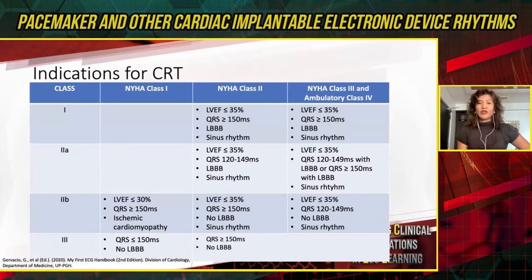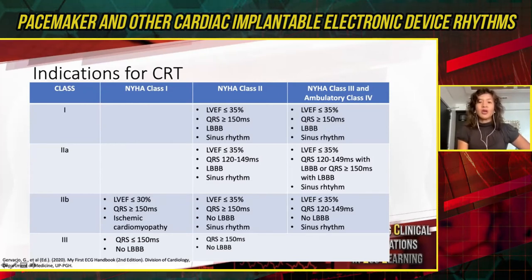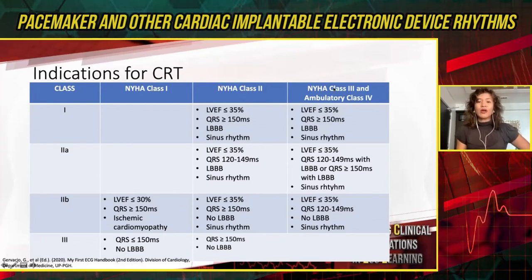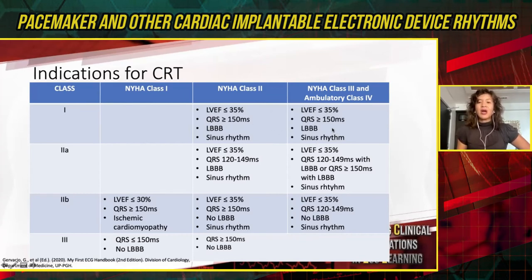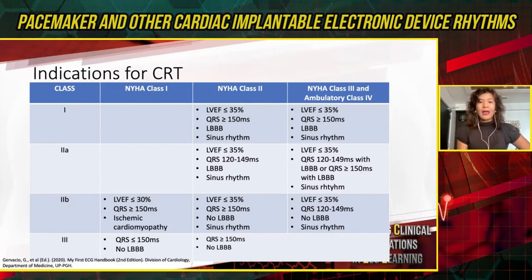For CRT indications, one only needs to remember the class one indication, as these patients have a very good response — some may even return to normal ejection fractions. Class one: advanced heart failure, class 2 to ambulatory class 4; typical LBBB in sinus rhythm with QRS wider than 150 milliseconds; and EF less than or equal to 35%. Class three: do not put in CRT if QRS are narrow or if the patient is only in mild heart failure. Everything else is class two.